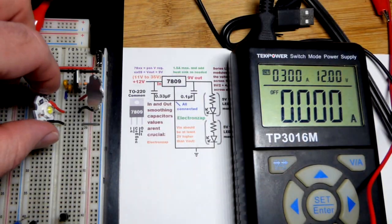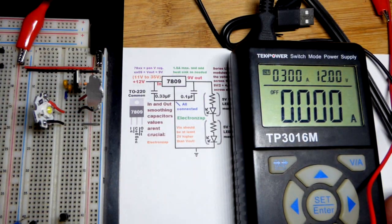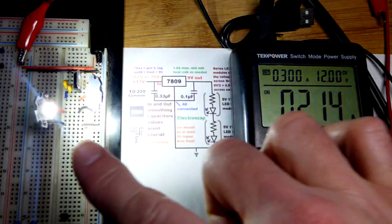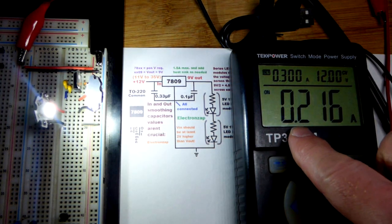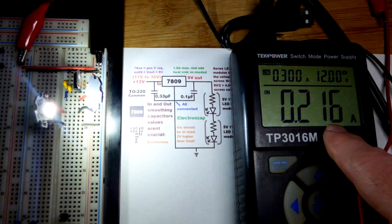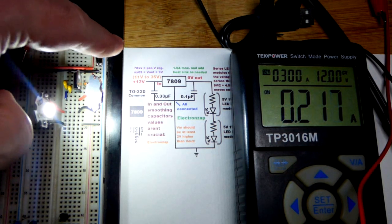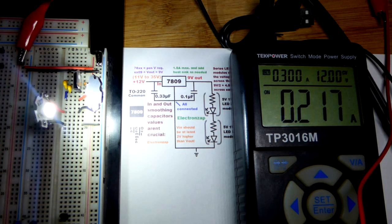In this video I'm going to show you how I safely light a couple of 5 volt 1 watt LEDs with a 12 volt power supply. As you can see we have about 0.216 amps or 216 milliamps of current running through this circuit.